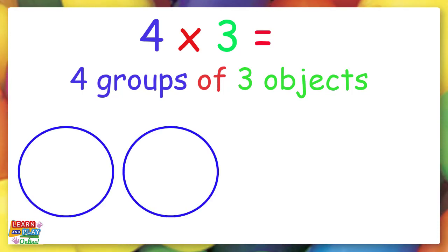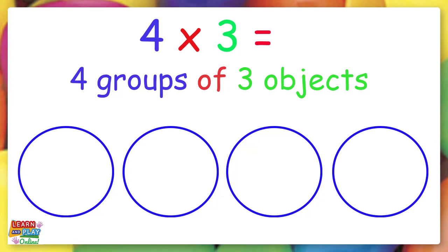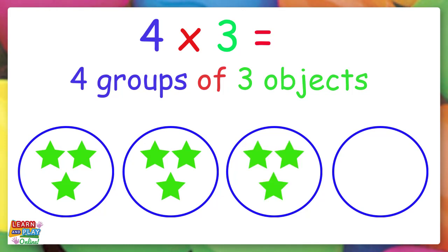1, 2, 3, 4. Now let's use stars as our objects, and we're going to put 3 stars in each group. Now we have made 4 groups of 3 stars in each group.